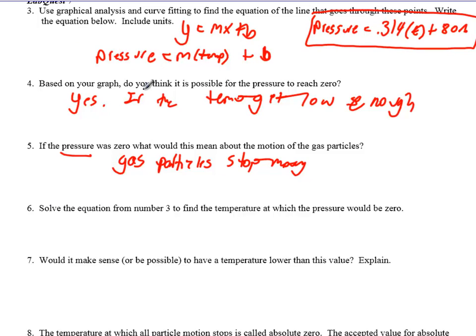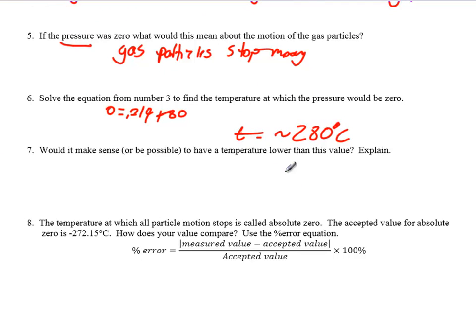So let's actually solve this equation up here in order to get the temperature which the pressure would be 0. So I put 0 in for pressure, equals whatever my slope was, 0.314, plus 80. And so, I'm going to subtract stuff over. And actually, in class, I think we had a temperature around minus 280 degrees Celsius, which is interesting. Would it make sense or be possible to have a temperature lower than this value? Well, the reason the temperature is this low is because the pressure is 0. And can I have a pressure less than 0? No, I can't have the particles actually start pulling in. That's actually exerting a force and causing a pressure again. So, no, the pressure can't be lower than 0. So the temperature can't get lower than this. So it all comes down to particle motion.